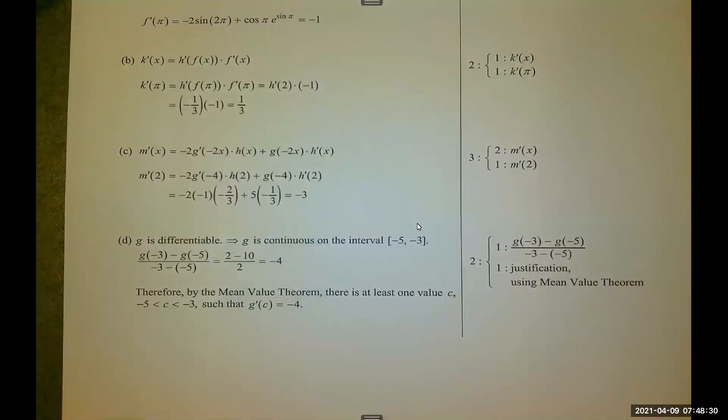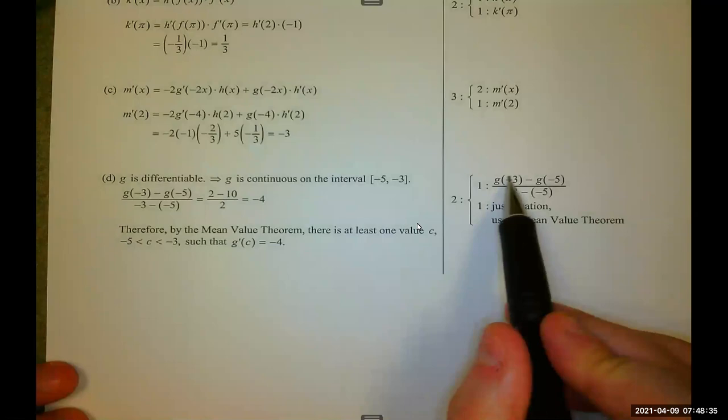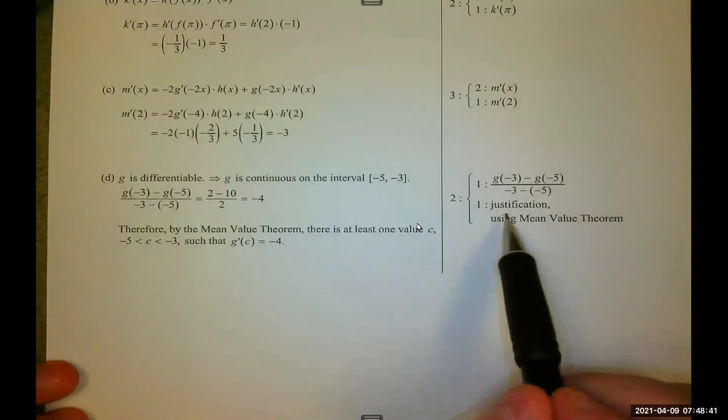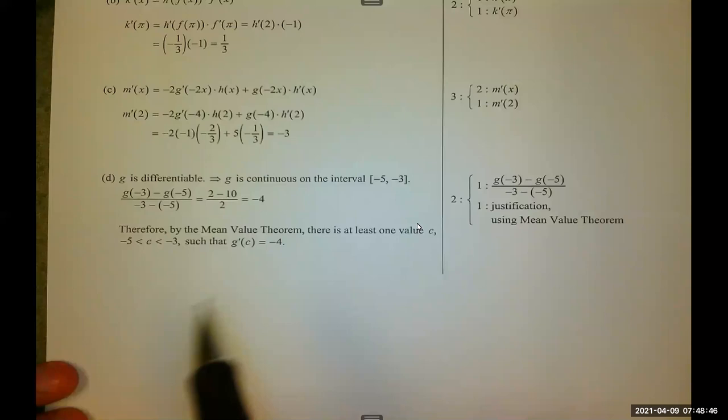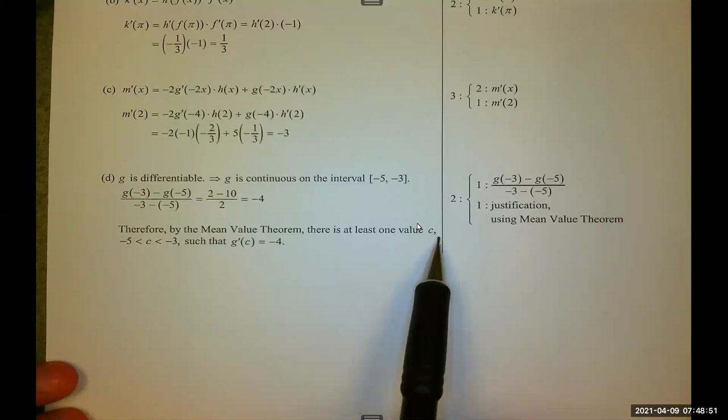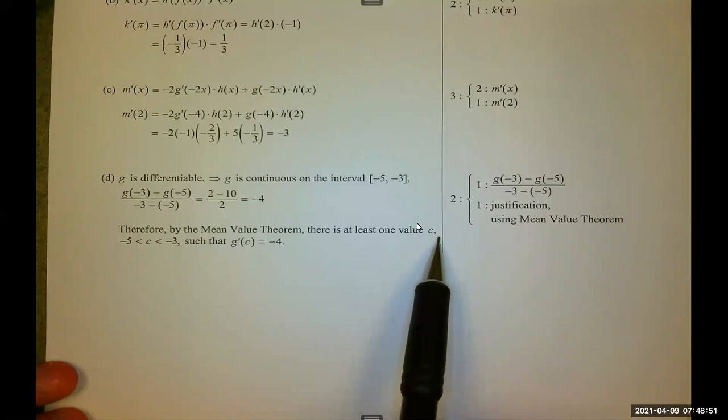You have to do both to get M prime, and then you have to do the arithmetic, including grabbing all these values, to get negative 3 until you get your third point. For part D, two points, one point for using this average rate of change difference quotient, and then one point for justification with the mean value theorem. Talking about how the function is continuous on the closed interval, differentiable on the open interval, so the mean value theorem applies, which means there's at least one C value on the open interval, negative 5, negative 3, such that G prime of C equals negative 4.